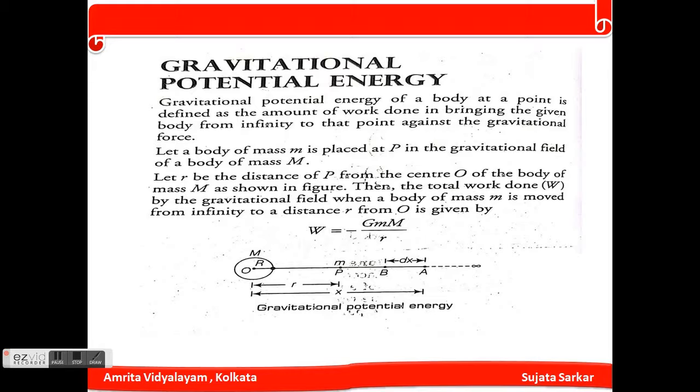So let a body of mass m be placed at point P in the gravitational field of a body of mass capital M. Now r is the distance of P from the center O of the body of mass M, as shown in the figure.